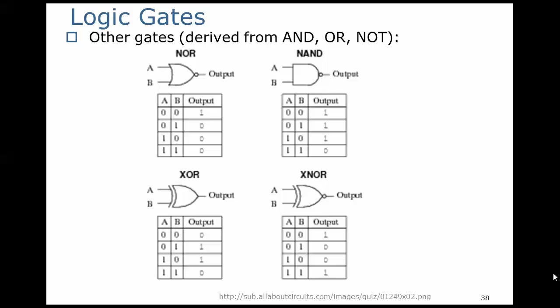And then we have two more sophisticated gates, the XOR, which is the exclusive OR, and then the XNOR is simply an exclusive OR with a NOT at the output.